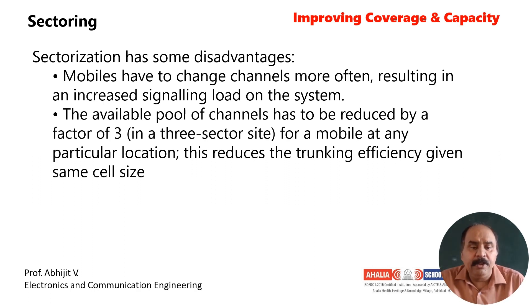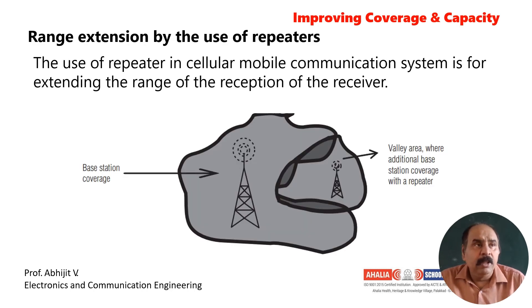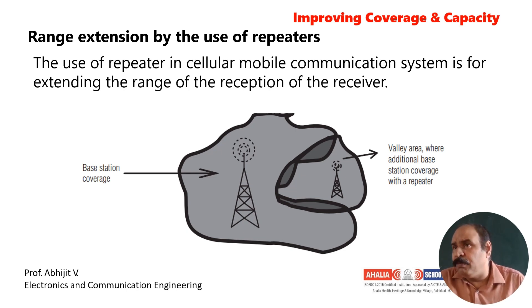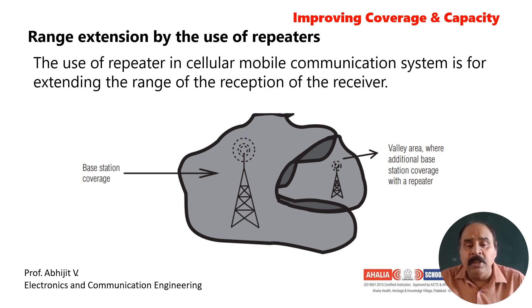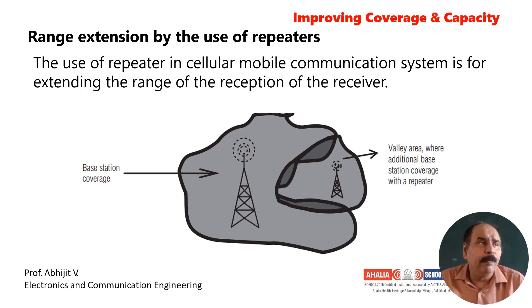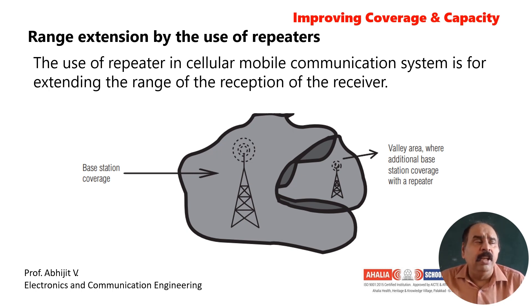The third method for improving coverage and capacity is extension of range by use of repeaters — a much simpler and more effective way to improve coverage. The use of repeaters in a cellular mobile communication system is for extending the range of reception of the receiver. In certain areas like hilly areas and valleys, repeaters are highly used.